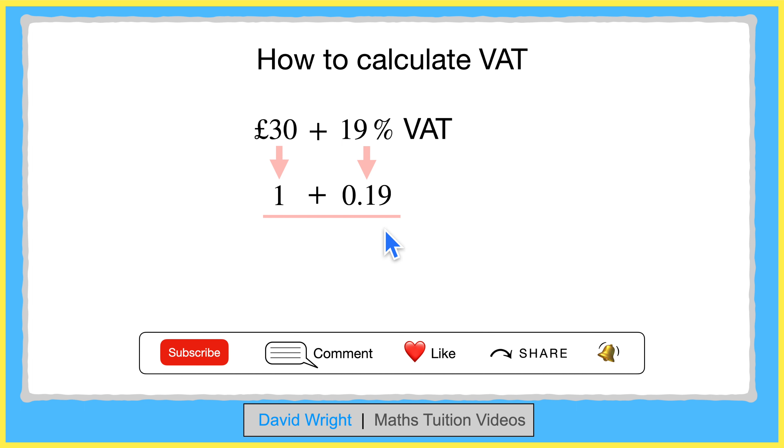So if we take £30 and multiply it by 1.19, we get a new price of £35.70. Therefore, 19% VAT added to an original price of £30 is £35.70.